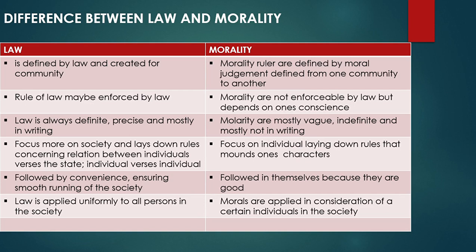Rules are applied uniformly to all persons in society, whereas morality is applied in consideration of certain individuals. Rules apply uniformly to every person, whether old or young, but morality varies with age — it seems to benefit some people more than others. For instance, morality may require young people to do something while exempting older people. Also, the gender factor operates in moral values: some things males are required to do, females cannot do, and vice versa. So morals are not applied uniformly.